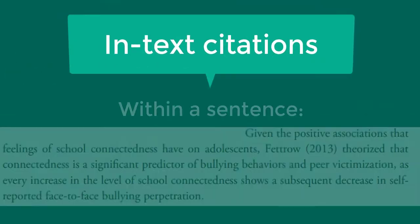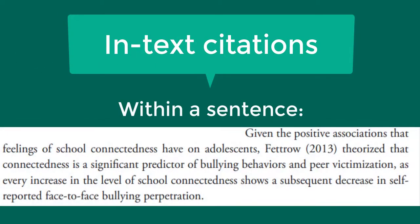The second way to write your in-text citation is to include it within your sentence instead of at the end. In this case, you would include the author's name within the sentence, directly followed by the year of publication in parentheses.